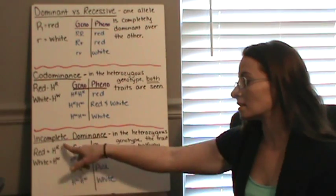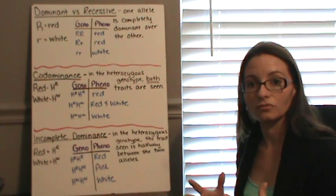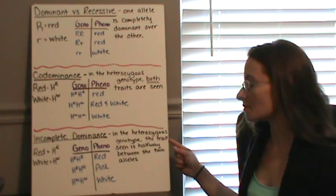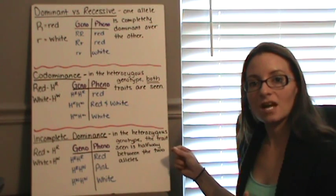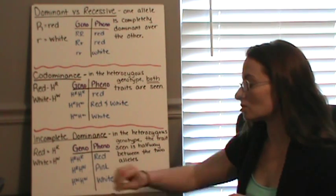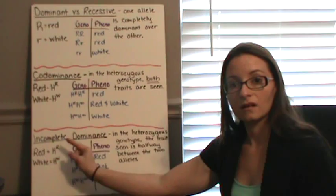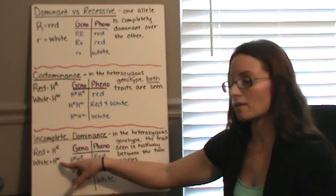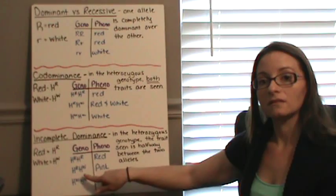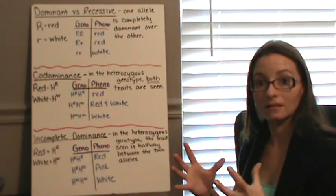The next pattern is incomplete dominance, where neither allele is fully dominant over the other. In the heterozygous genotype, the phenotype is actually halfway between the two traits. We still use the H with superscript R or W for red and white. Two red alleles appear red, two white alleles appear white, but a red allele combined with a white allele appears halfway between — so it shows up as pink in color.